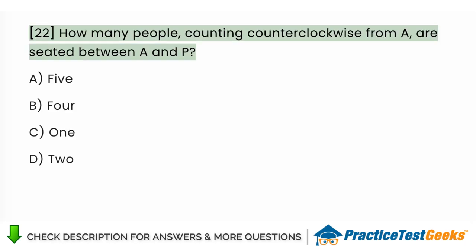How many people, counting counterclockwise from A, are seated between A and P? A. Five B. Four C. One D. Two